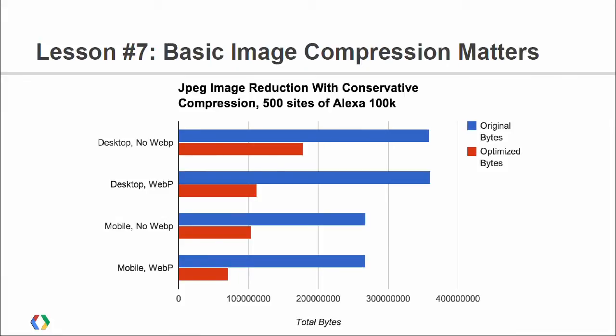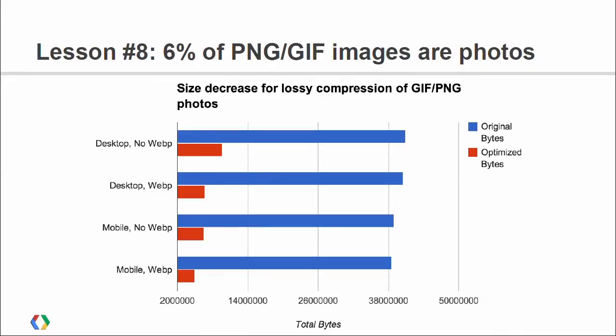Beyond the velocity site, basic image compression matters. You'd think that getting images compressed properly across the top sites on the web would be pretty good, but we found that just using ModPageSpeed's default compression — which is very conservative — we can actually reduce JPEG file sizes by 76% when serving to an Android phone or any phone with Chrome that can take WebP, or about 62% for an iPhone. Some photos are even still served as GIFs and PNGs, where we can take 88% off the top without any visual difference.